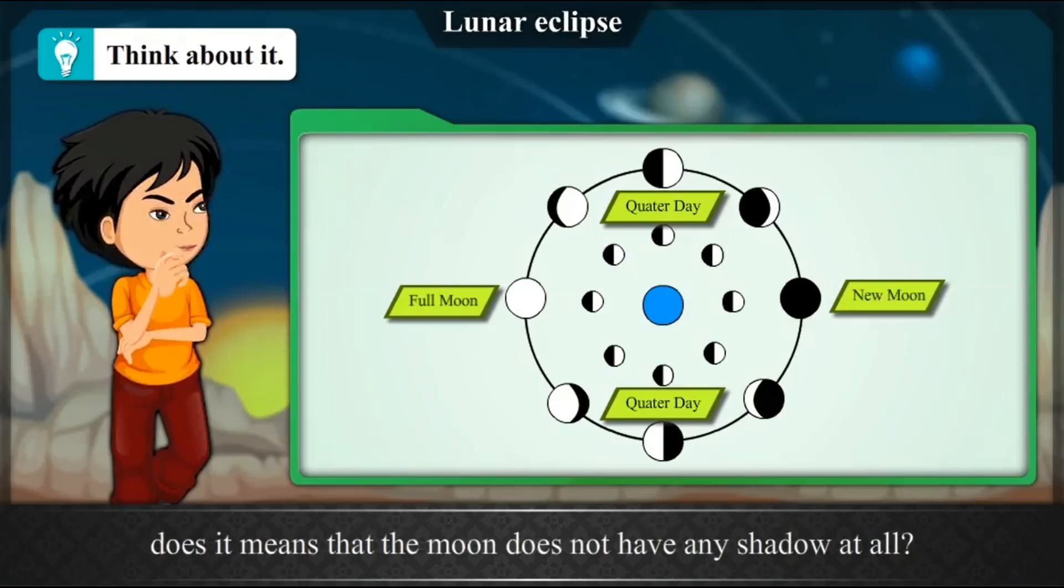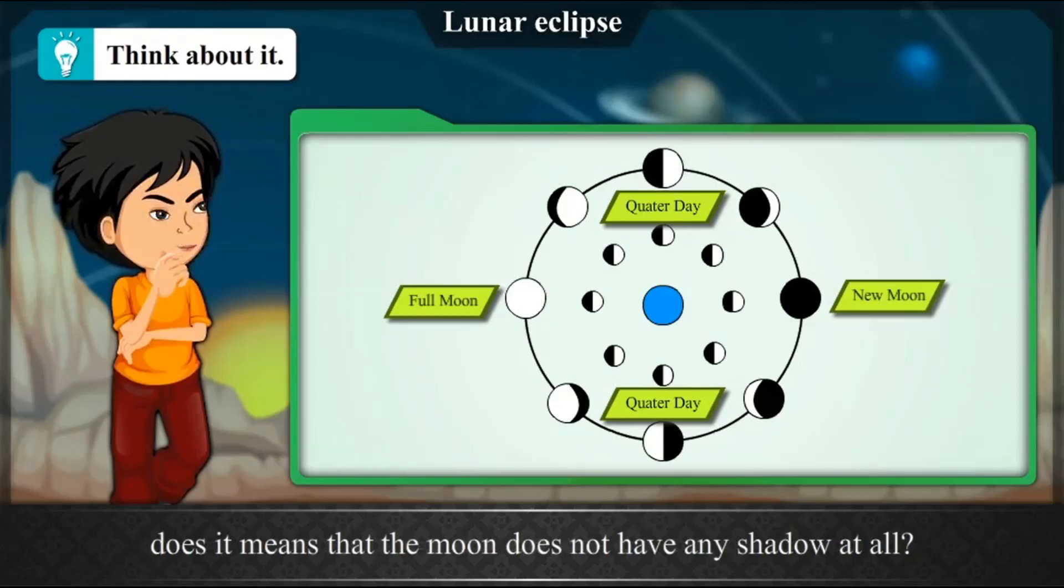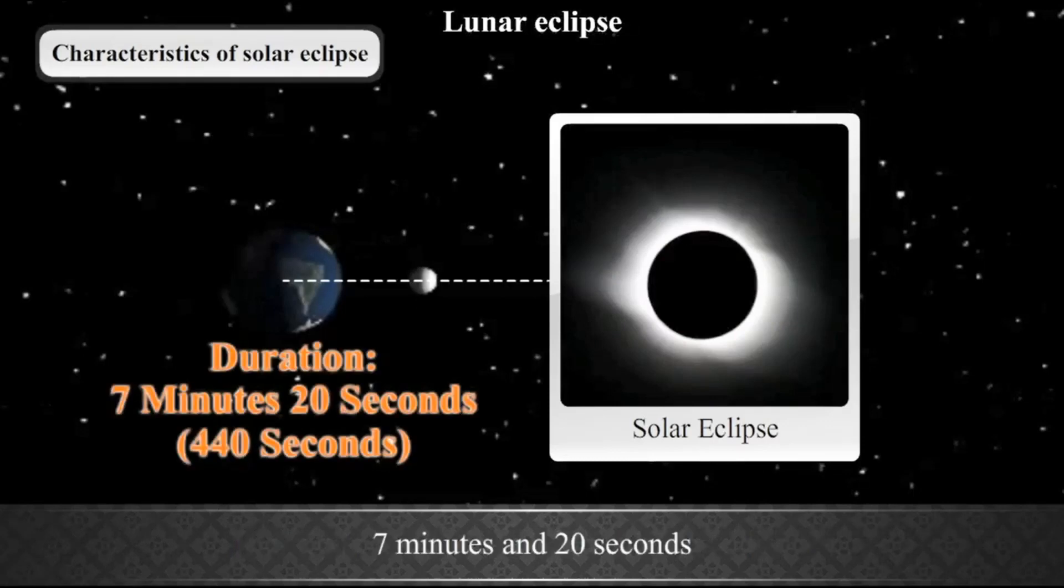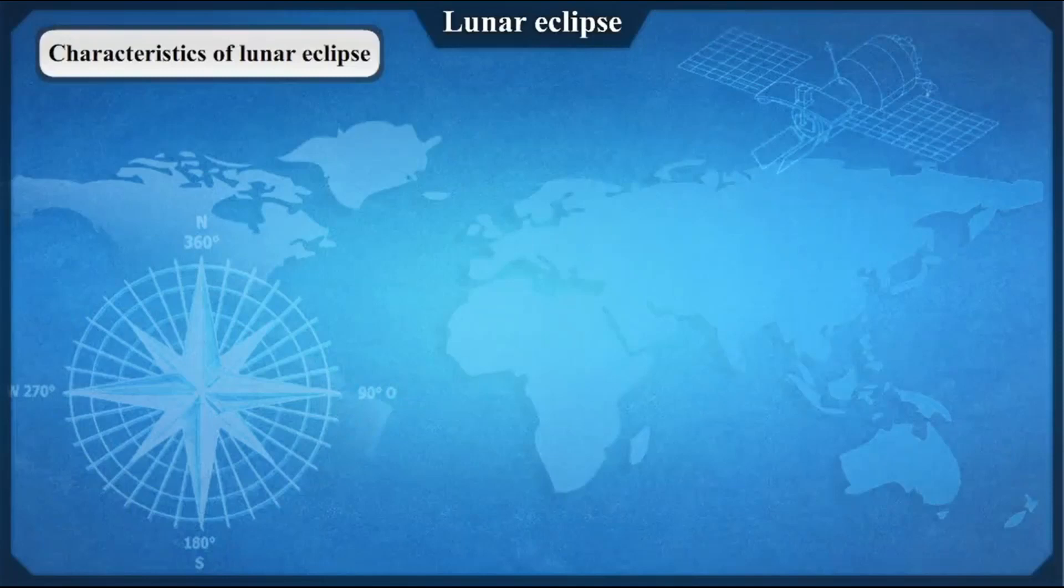If and only if the Sun, the Moon and the Earth are in the same plane and fall in one line, the solar eclipses occur. The maximum duration of a total solar eclipse is 7 minutes and 20 seconds or 440 seconds. Characteristics of Lunar Eclipse. A lunar eclipse occurs on a full Moon day, but not on every full Moon day. A lunar eclipse occurs if and only if the Sun, the Moon and the Earth are in the same plane and fall in one line. The maximum duration of a total lunar eclipse is 107 minutes.